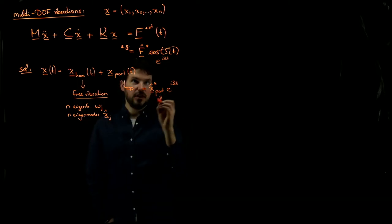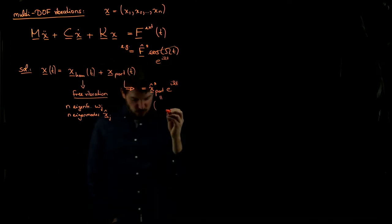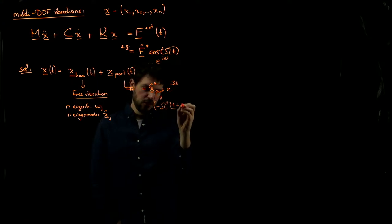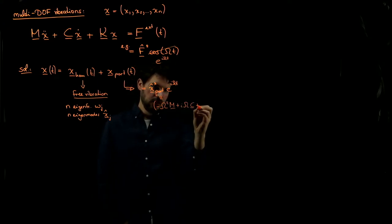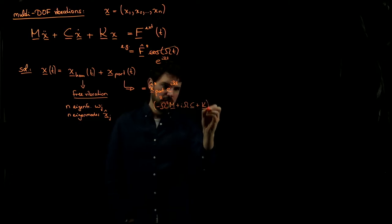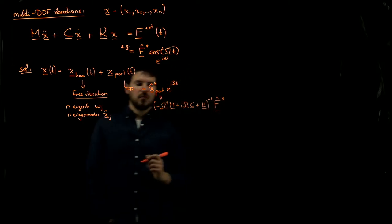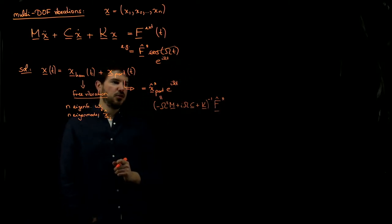In particular, this guy over here was given by plugging a general solution into this form, leads to minus omega squared m plus i omega c plus k times f hat star. We take the inverse here. This is how we can generally find the solution.